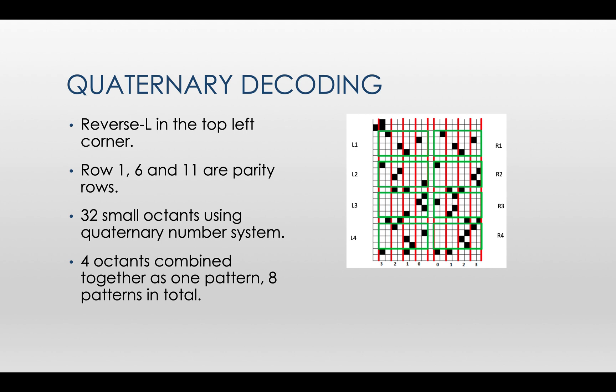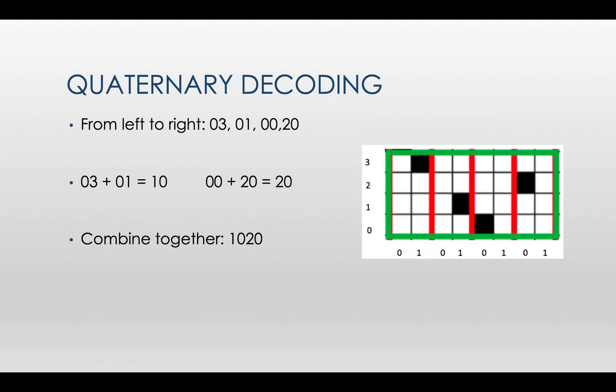The next step, I will show you how these quaternary numbers are calculated. I take the first four top left octants as example. Each row has two columns and row number ranges from 0 to 3. If there is a dot in the column, then give the value according to the column number. For instance, the first octant has a dot in the third row with the second column, then it represents the value 0, 3.